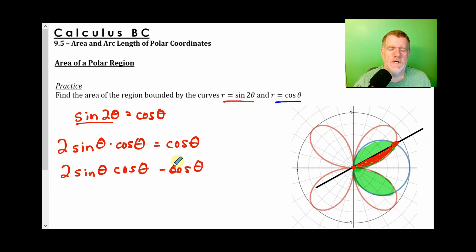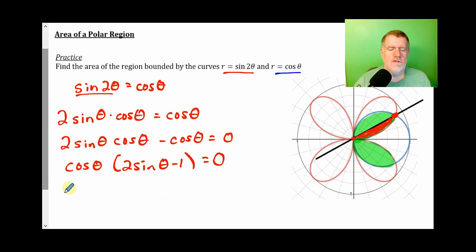Let's subtract cosine from both sides. We'll factor out a cosine. So here I got two possibilities. Cosine of theta equals zero. And 2 sine of theta minus 1 equals zero. Cosine would equal zero at pi over two.